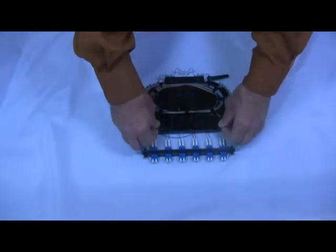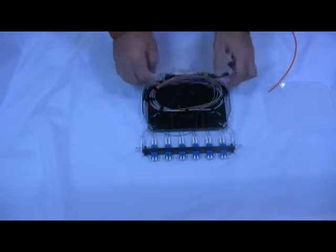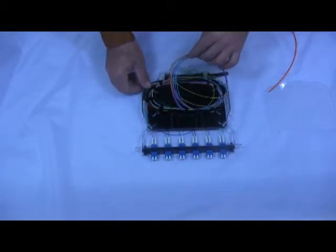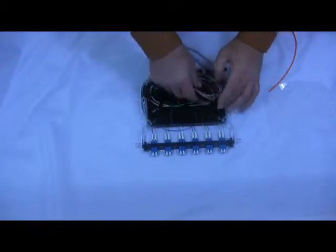You'll want to remove your splice tray cover and pull out your 900 micron tails in order to splice. That gives you enough length that you can reach over and get to your splice machine.